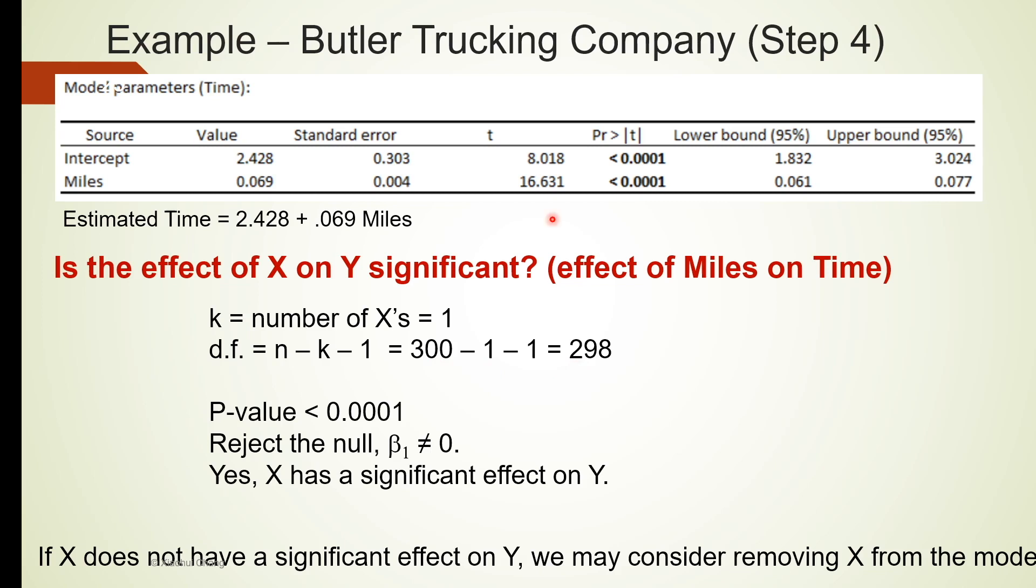Based on the t-statistic of 16.631 and degrees of freedom 298, we can calculate the p-value using Excel t.dist function. But in many cases, we probably don't need to calculate the p-values manually, as the p-value is usually given to us in the table form. For example, in our example, the p-value is less than 0.0001. The p-value is super small. Regardless of the significance level alpha, we should be able to reject the null and conclude that the beta 1 or the slope coefficient is different from 0. If the slope is different from 0, that means x has a significant effect on y, or miles has a significant effect on time. This completes the hypothesis test.